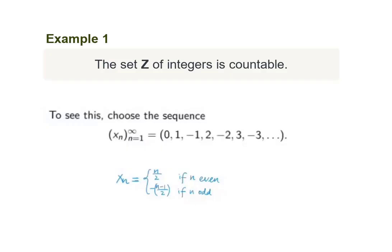Example 1. The set of integers is countable. We recall from the definition that a set A is said to be countable if there exists an infinite sequence in which every element of A appears. We have found that if we take the sequence defined by x_n = n/2 if n is even, and x_n = -(n-1)/2 if n is odd, then every element of the set of integers appears with no repetition and no omission. Therefore, Z is countable.